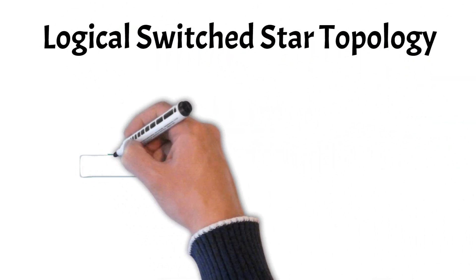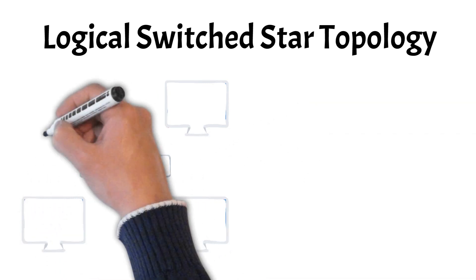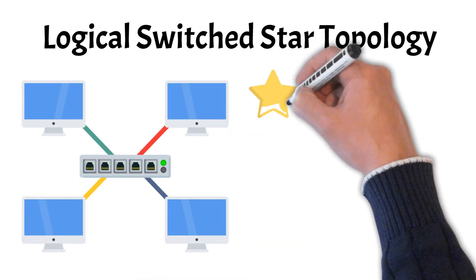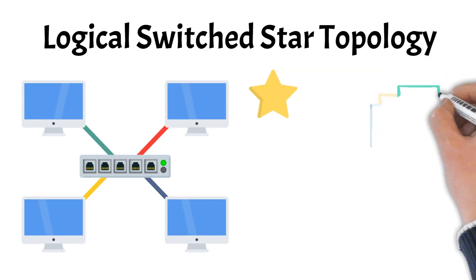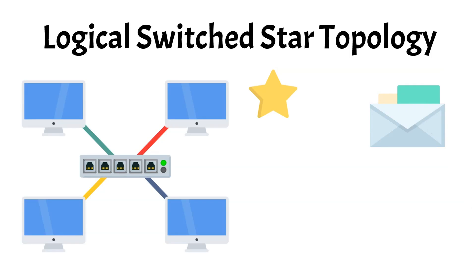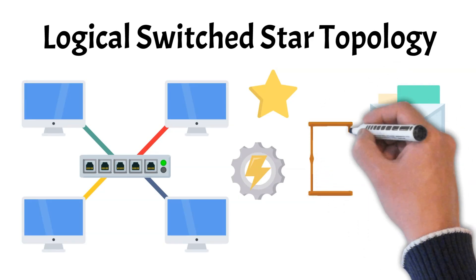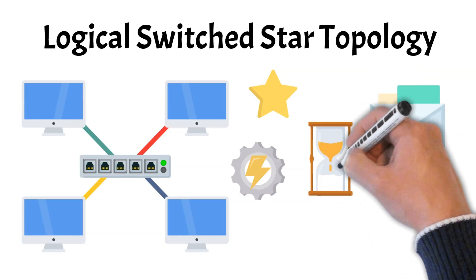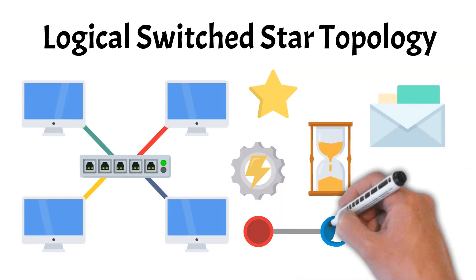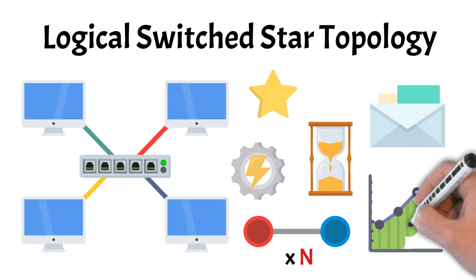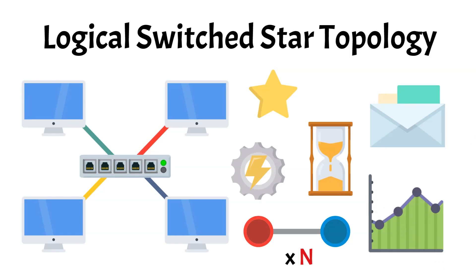Now let's look at the logical switch topology, common in modern Ethernet networks. Physically it still forms a star — each device connects to a central switch — but logically it's also considered a star, since all communication flows through that same central point. What makes it distinct as a logical topology is how the switch manages data: instead of broadcasting to everyone like a hub, it reads the destination address and forwards data only to the intended device. This creates a temporary direct link between the sender and receiver — almost like multiple point-to-point connections happening at once — making the network faster, more efficient, and free from collisions.